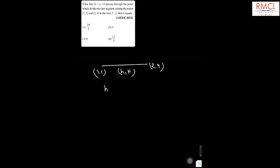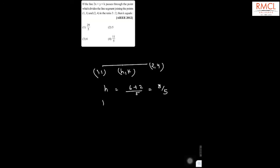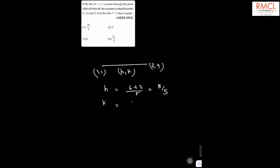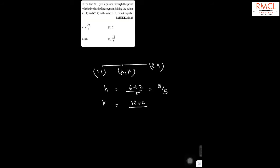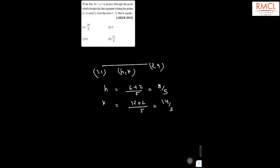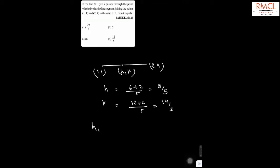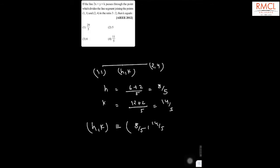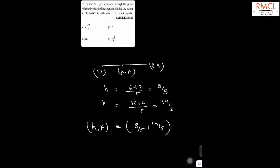So we can say that h is equal to 6 plus 2 divided by 5, that is 8 by 5, and k is equal to 12 plus 2 divided by 5, that is 14 by 5. So (h,k) is given by 8 by 5 comma 14 by 5.